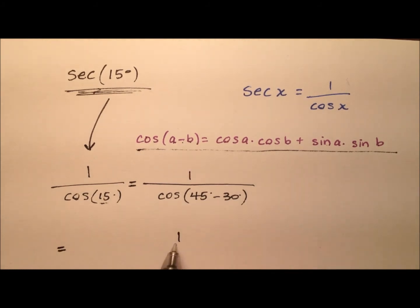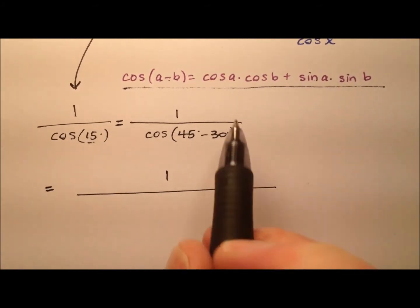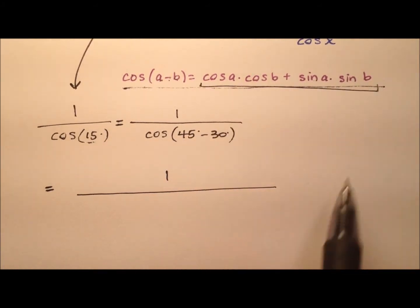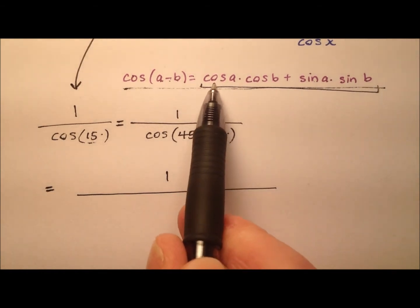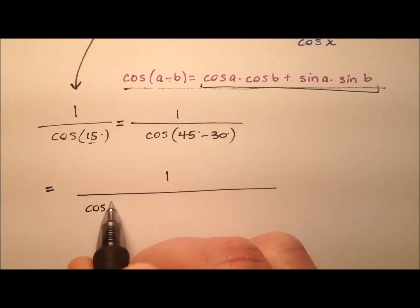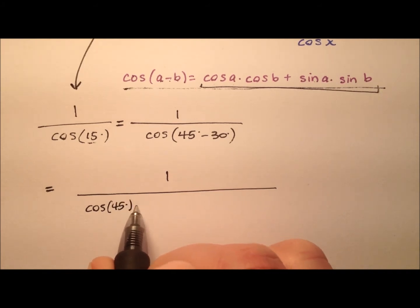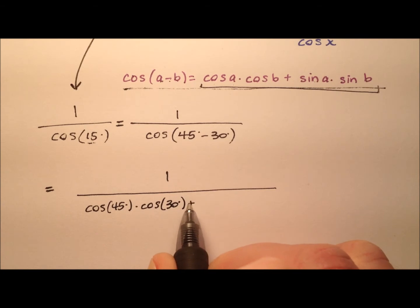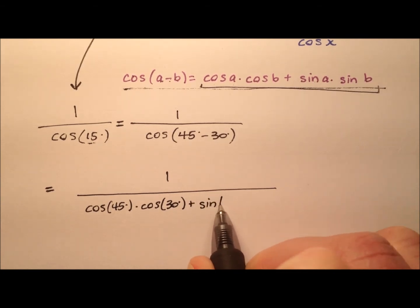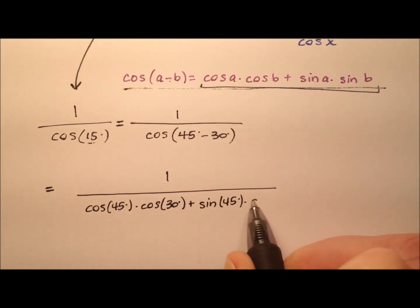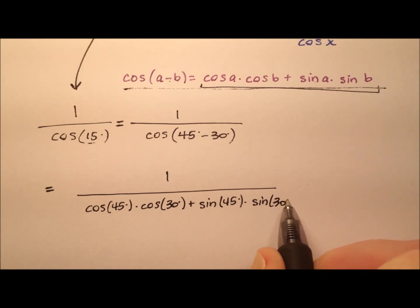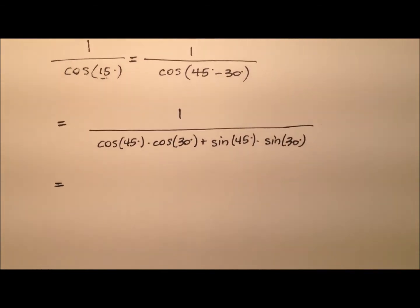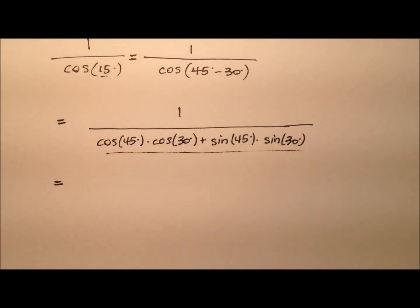Let's go ahead and use this expansion. We'll have a big line there for our fraction and use this expansion formula. So the cosine of a will be the cosine of 45 degrees times the cosine of 30 degrees, plus the sine of 45 degrees times the sine of 30 degrees. Now let's plug these values in and simplify.